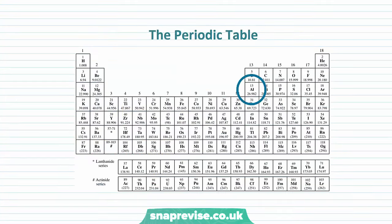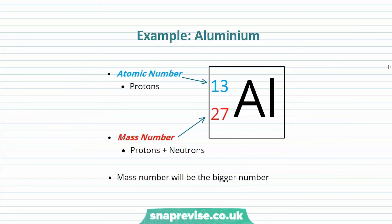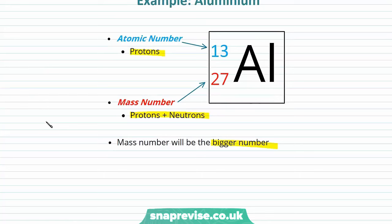So let's have a look at an example. I've chosen the element aluminium. Here we have aluminium with its mass number of 27 and its atomic number of 13. Now this representation may look slightly different to the general one we looked at — some periodic tables give the atomic number on top and some on the bottom. It's important to recognise that the mass number, which is the number of protons and neutrons, will be the bigger number compared to the atomic number, which is just the number of protons. So aluminium has a mass number of 27, meaning the number of protons and neutrons is 27, and an atomic number of 13.